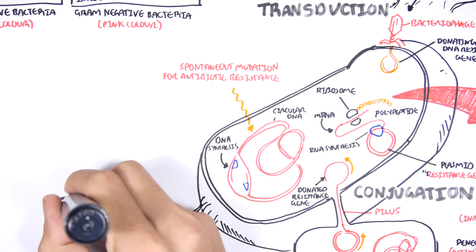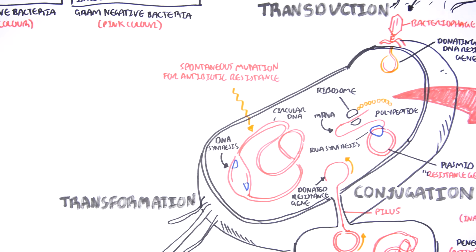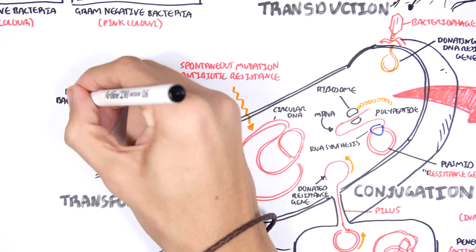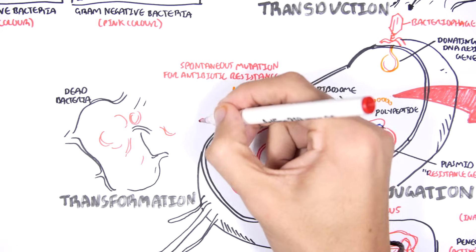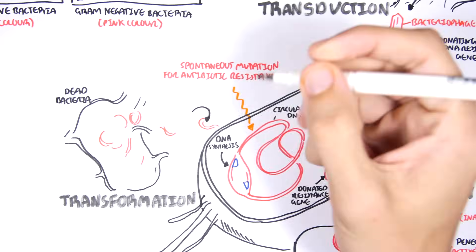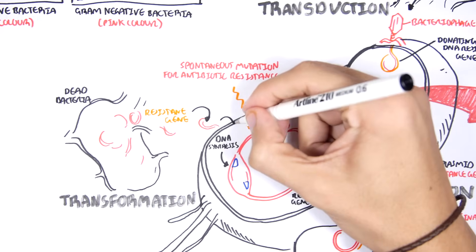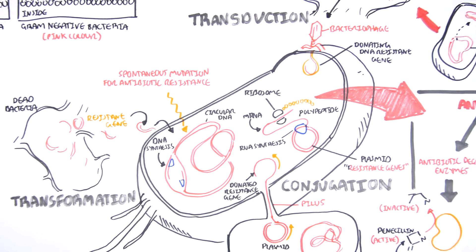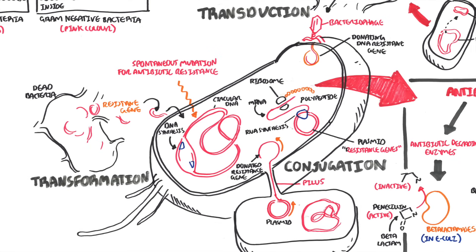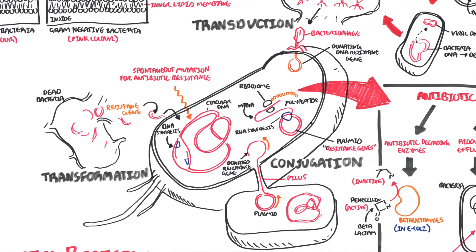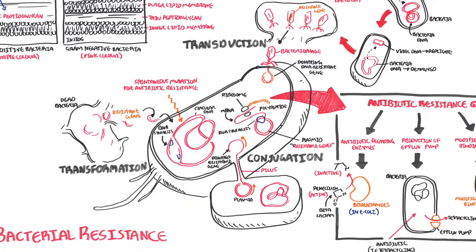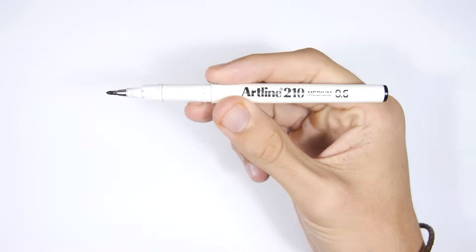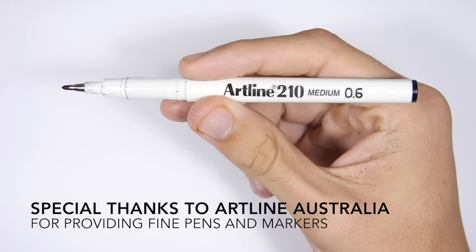The last type of horizontal gene transfer is called transformation, which is basically when another bacteria containing a resistant gene dies or lyses, releasing the resistant gene. The resistant gene can then be picked up by another bacteria, which will incorporate it into its genome, allowing it to become resistant to some form of antibiotic. Those were the important ways bacteria acquire resistant genes: conjugation, transduction, and transformation. I hope you enjoyed this video. Thank you.